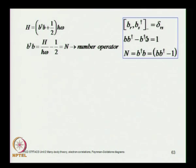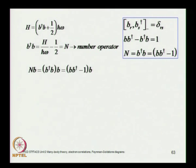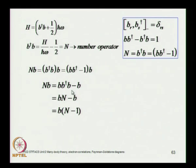The fundamental commutation rule is b·b-dagger minus b-dagger·b = 1, which means b-dagger·b = b·b-dagger minus 1. Playing with these terms gives useful results. Finding n·b where n = b-dagger·b: n·b = b-dagger·b·b = (b·b-dagger - 1)·b = b·b-dagger·b - b, which gives b·(n - 1). So n·b = b·(n - 1).